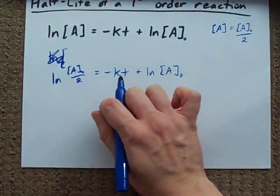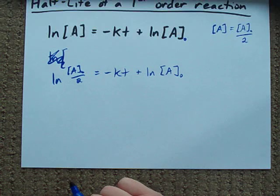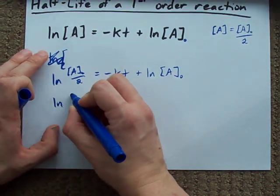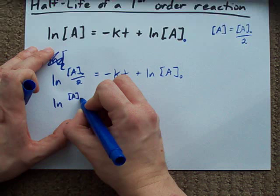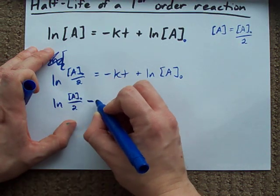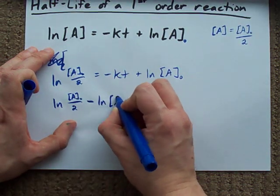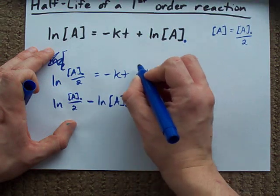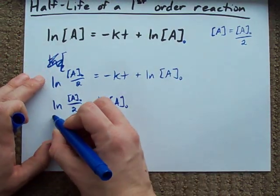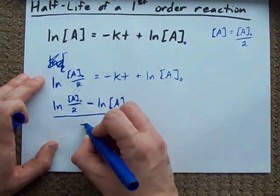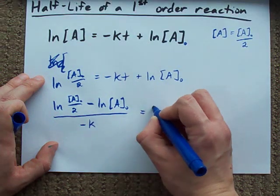Now all we have to do is actually solve for T. So what I get here is the ln of the initial concentration divided by 2 minus the ln of the initial concentration. See how I moved it to the other side? All divided by negative k gives me my T.